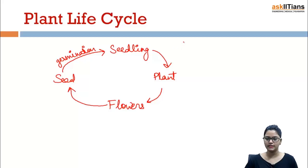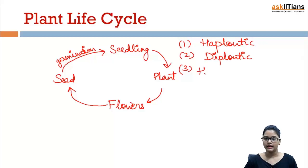And we have basically three types of life cycles. First one is the haplontic life cycle, second one is the diplontic life cycle, and third one is the haplodiplontic life cycle.